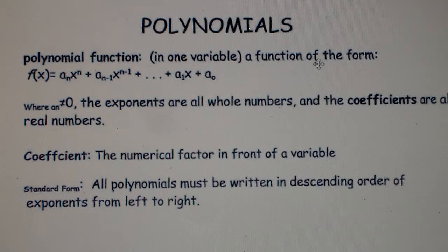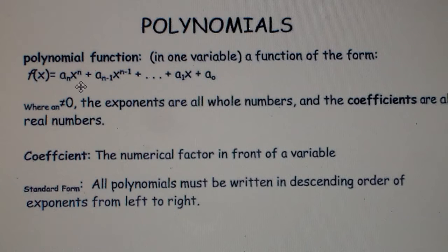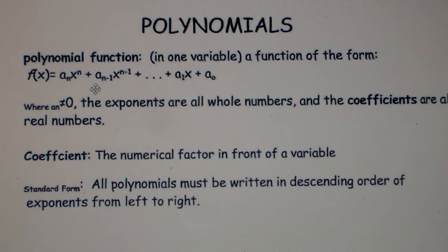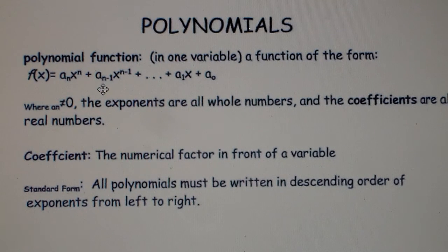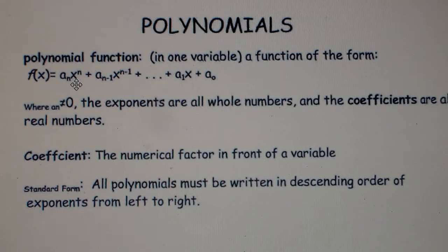A polynomial function in one variable is a function of the form f(x) equals aₙ times x to the n, and so on. That's the standard formula for polynomials, where n stands for a number, a stands for the coefficient in front of the variable x, x is the base, and the little n stands for the highest power. That's just the mathematical way of listing your terms from highest power to lowest power.